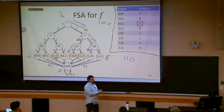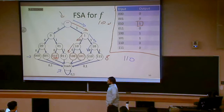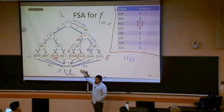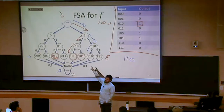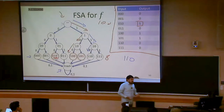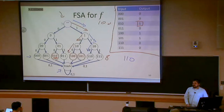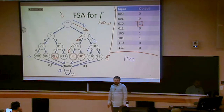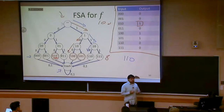Any finite function you give me, I can build this binary tree-like structure to navigate to the correct answer. So we can do any finite function with a finite state automaton. We need the trash state because FSA can take strings of any length — we only want to return 1 for strings of the correct length, so longer strings fall into that non-final trash state. We now know finite state automata are a strictly more powerful model of computing.